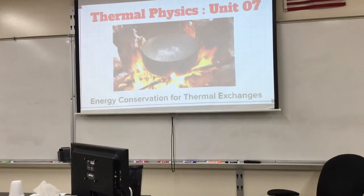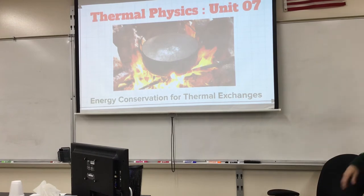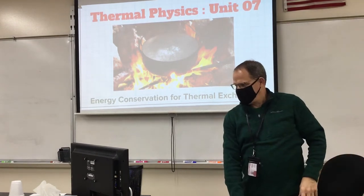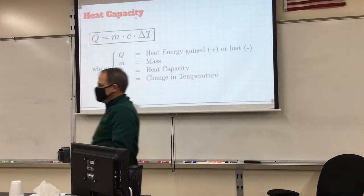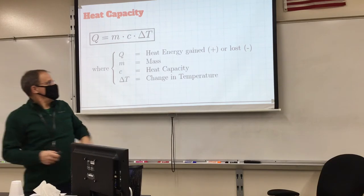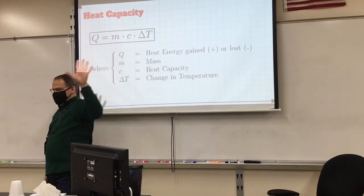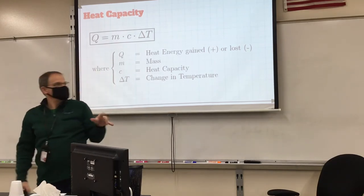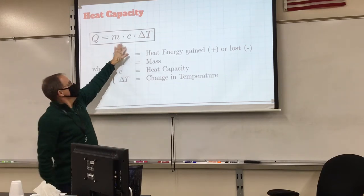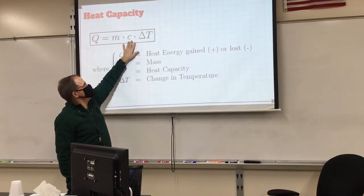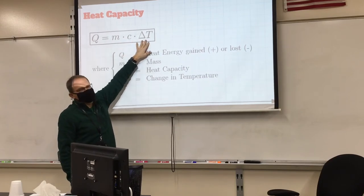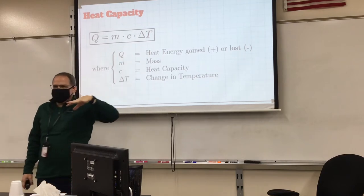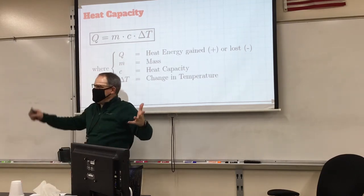Homework problem number one — you'll need your notebooks in a couple minutes. I think you all know that Q equals mc delta T. Q is the amount of heat it takes to do a job, m is the mass of the object or substance, c is the heat capacity which you look up in a table, and delta T is the change in temperature. So if you want to make something warmer you've got to add heat.